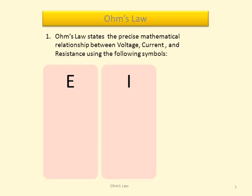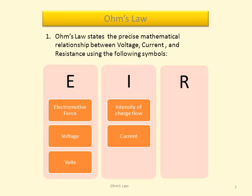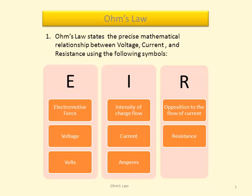E, I, and R. E stands for electromotive force, or voltage, which is expressed in volts. I stands for intensity of charge flow, or current, which is expressed in amperes. R stands for the opposition to the flow of current, or resistance, which is expressed in ohms.